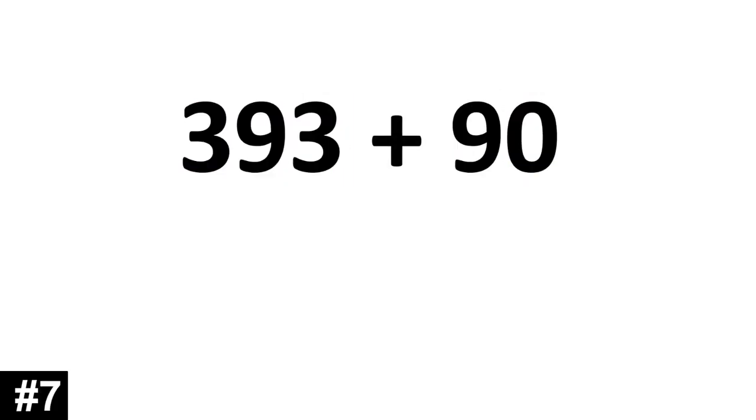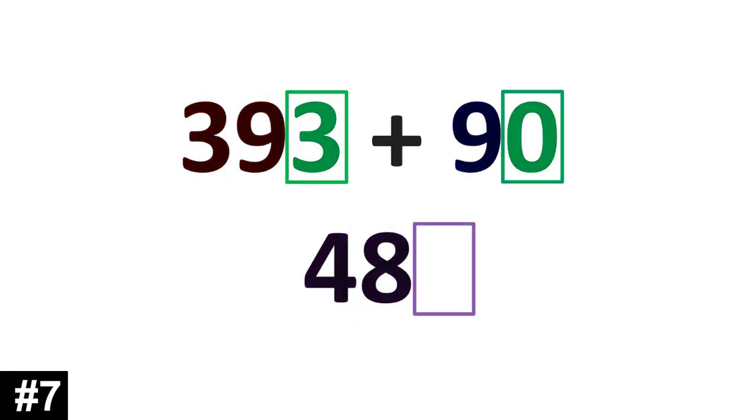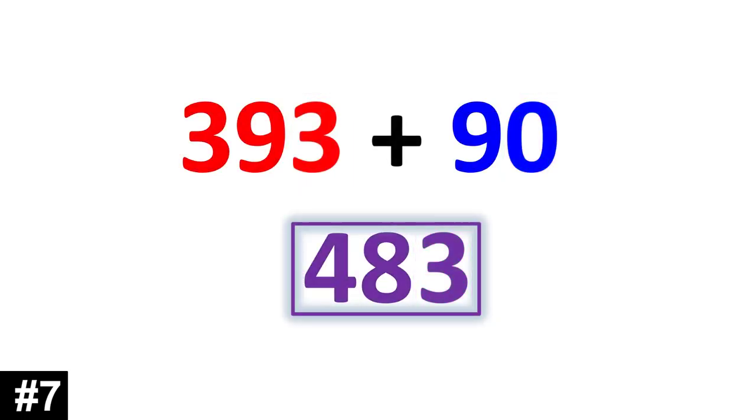393 plus 90. We have 39 tens and 9 tens. 39 plus 9 is 48. We look to the ones. 0 plus 3 is 3. So, 393 plus 90, 483.